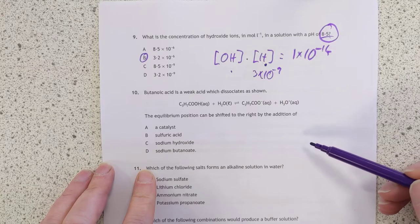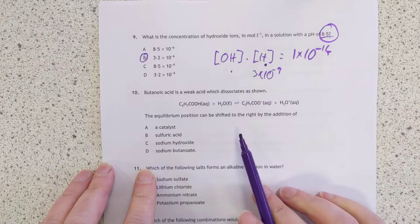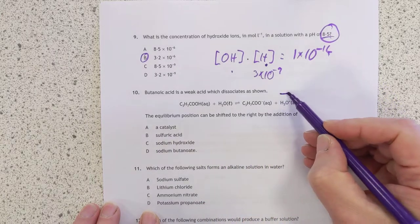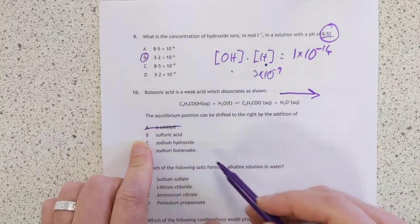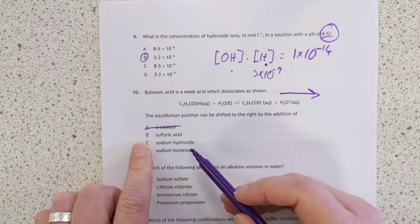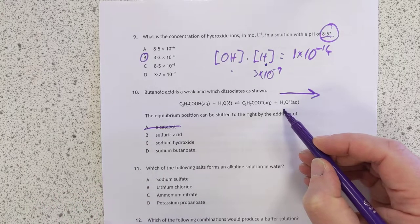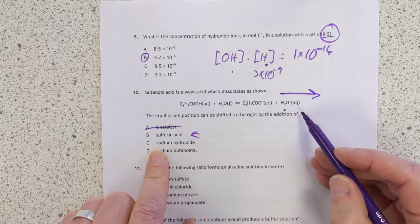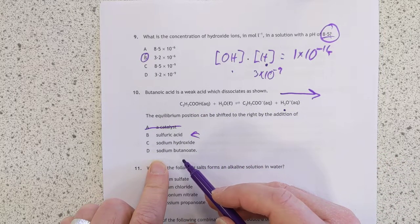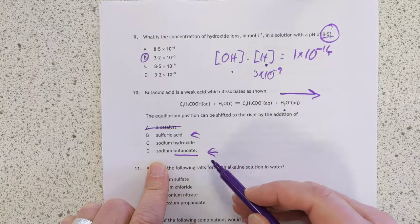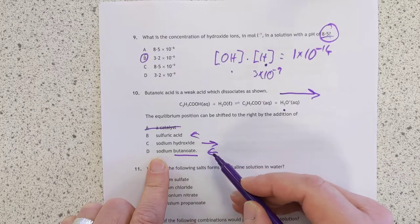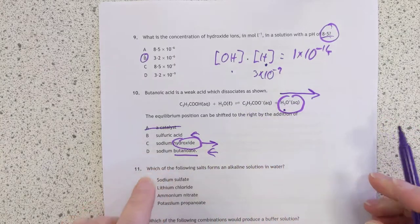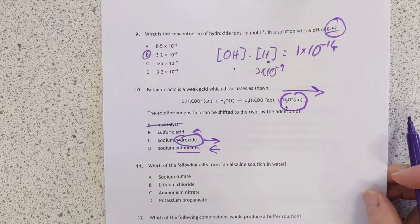Number 10. Butanoic acid is a weak acid which dissociates as shown. The equilibrium can be shifted to the right. This is also a sort of higher question. Catalyst? Nope. Catalysts don't change the equilibrium position. Sulfuric acid would add hydrogen or hydronium ions, so that would drive it to the left. That's wrong. Sodium hydroxide doesn't appear to be involved in this. Sodium butanoate would release butanoate ions, which again would drive it to the left. This one here is the only one that will drive it to the right because you will kidnap these due to the hydroxide ions, and you will drive the equilibrium to the right. It's a higher question, interestingly, basically.